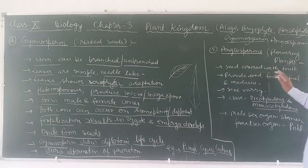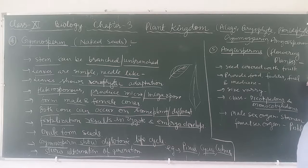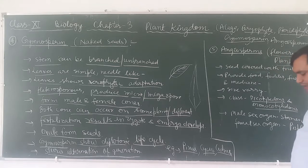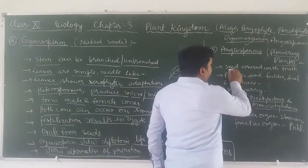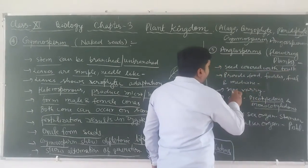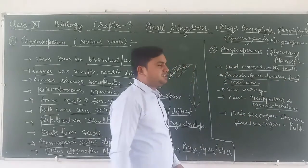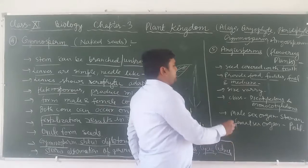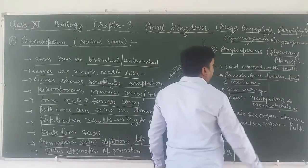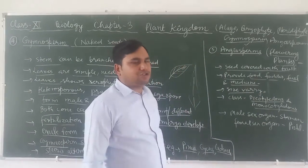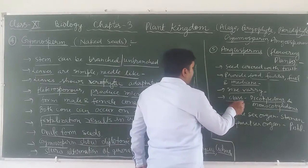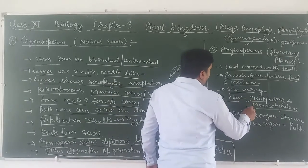Now a few words about angiosperm, because this topic has been cut from the current syllabus of 2020-21. Angiosperms are flowering plants. The seed is covered with fruit in angiosperms. They provide food, fodder, fuel, and medicine. These flowering plants vary in size from microscopic to very large. Their class is divided into dicotyledon and monocotyledon.